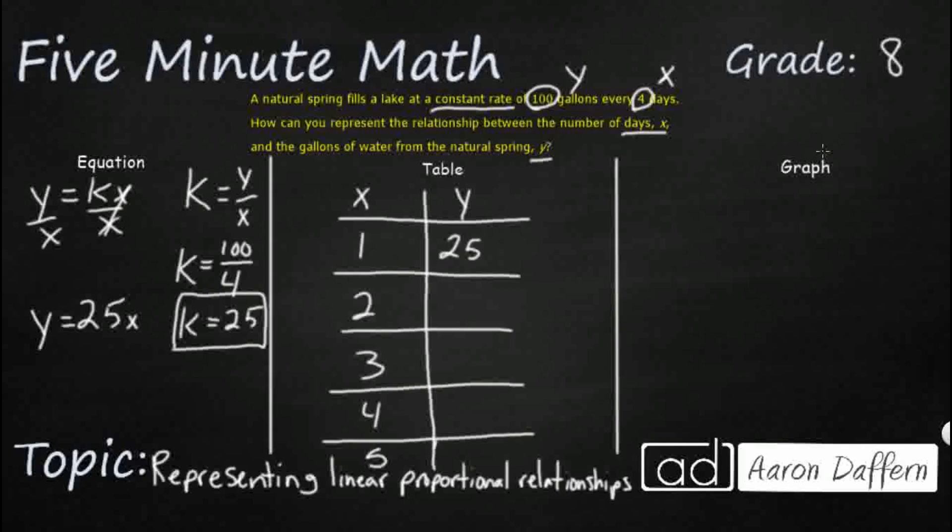So now that we know our constant of proportionality is 25, it's pretty easy. We're just skip counting by 25s. We can go up to 125. We can go as much as we want to, because really it's just times 25. Pretty simple.